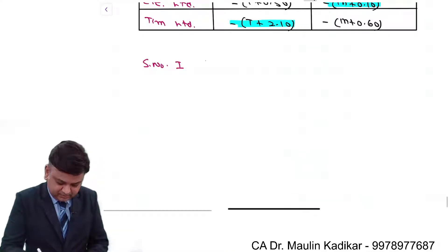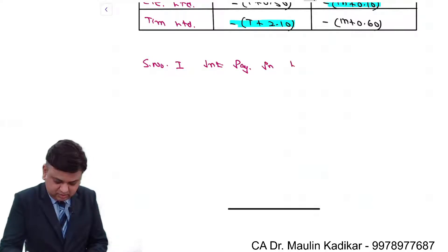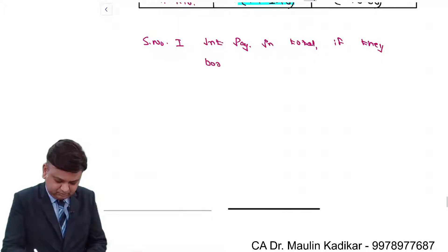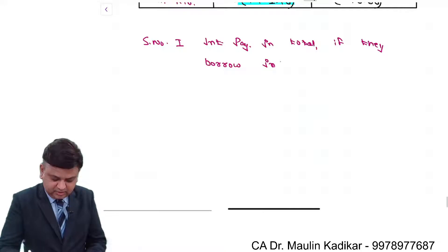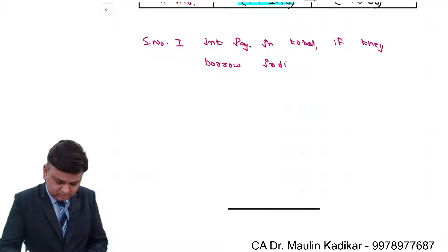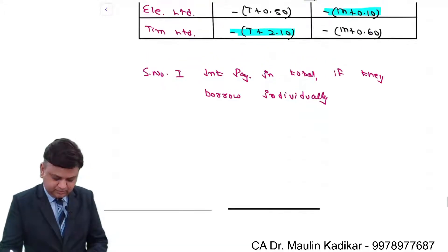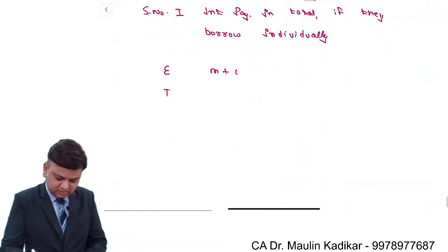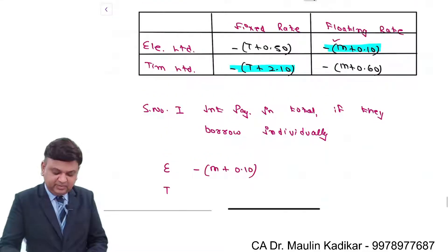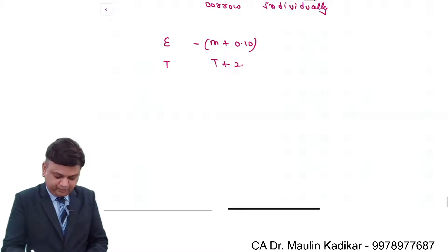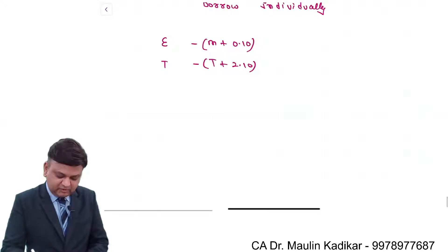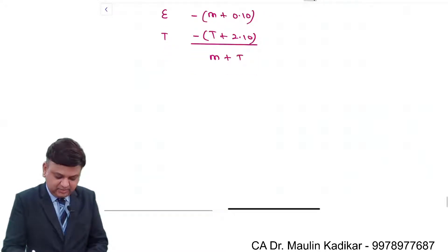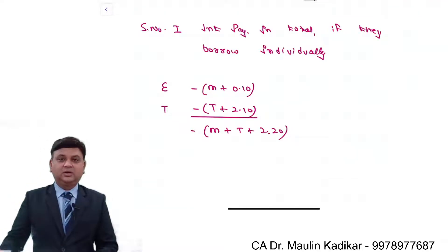Step 1: Interest payment in total if they borrow individually. For E Limited, the interest payment will be MIBOR plus 0.10%, and for T Limited it is T plus 2.10%. So the total interest payment will be M plus T plus 2.20. This is the interest payment if they borrow independently.